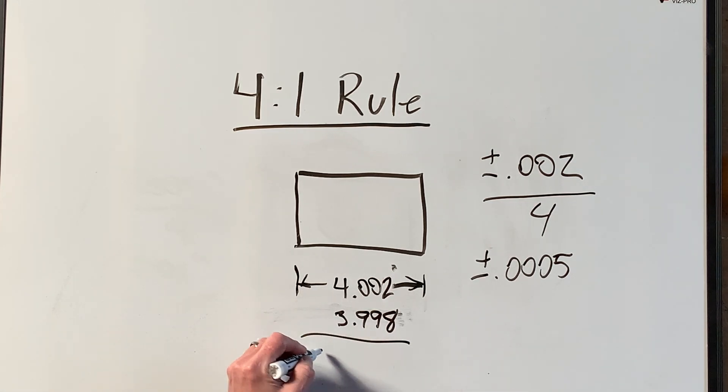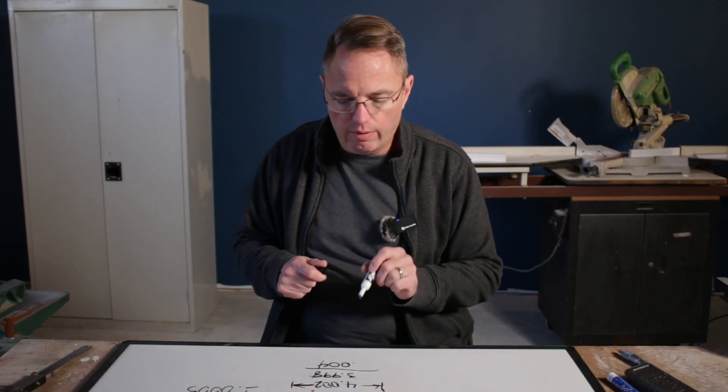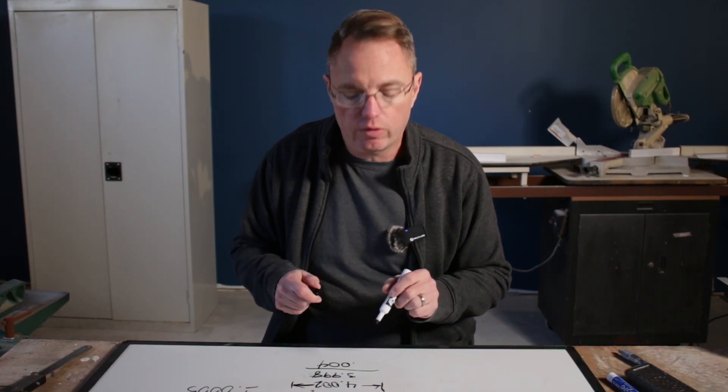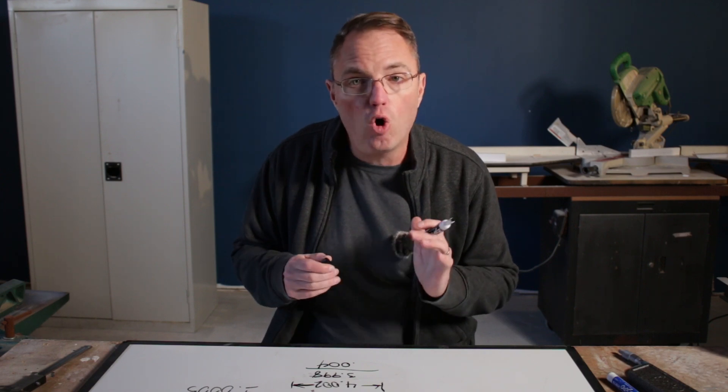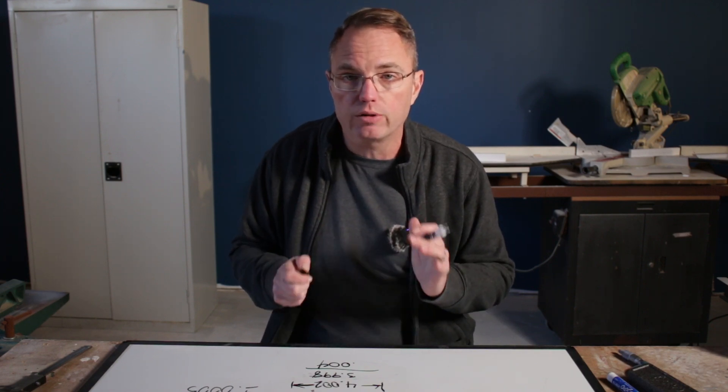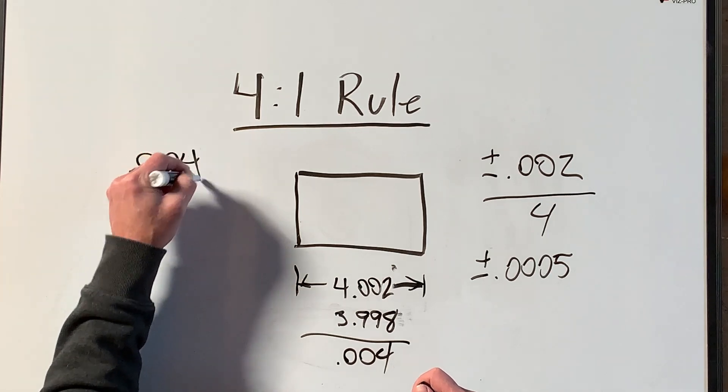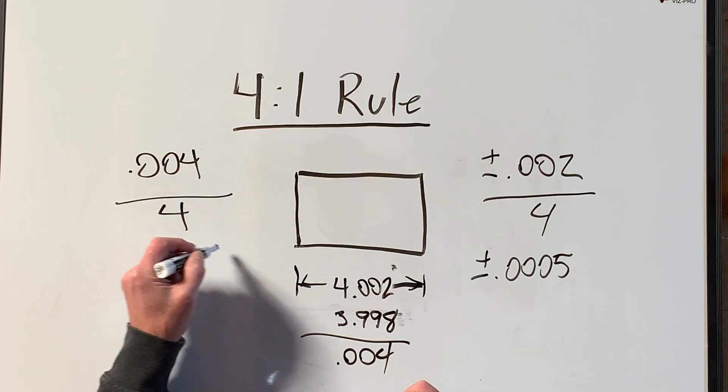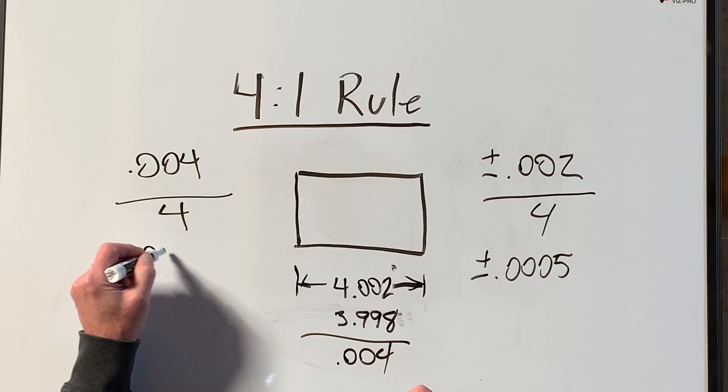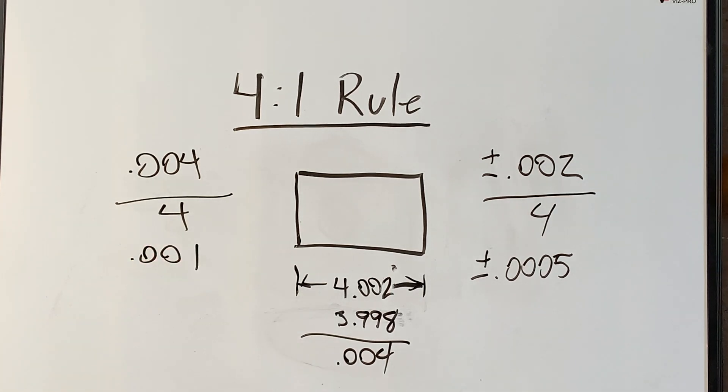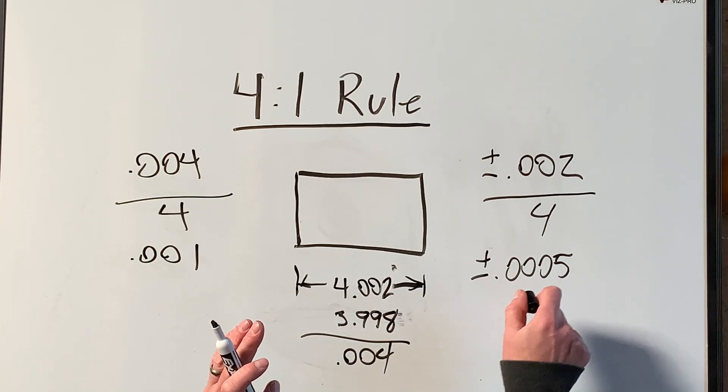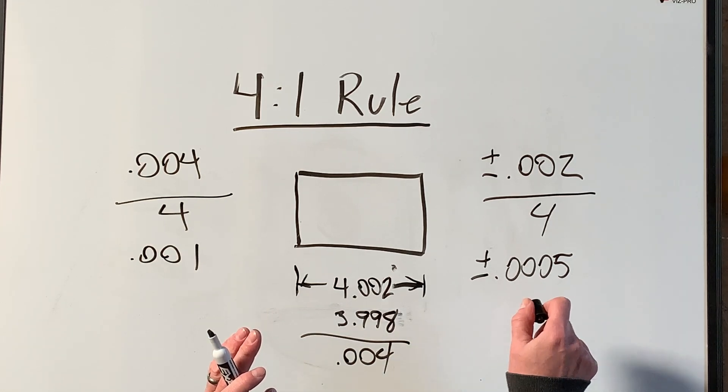So if you use this, you'll get four thousandths of an inch as your total tolerance, not your plus or minus tolerance. In this case, you take your total tolerance, divide by four, and you get a total tolerance of one thousandth of an inch. That is the same as the plus or minus five ten-thousandths of an inch, it's just written as a total tolerance.